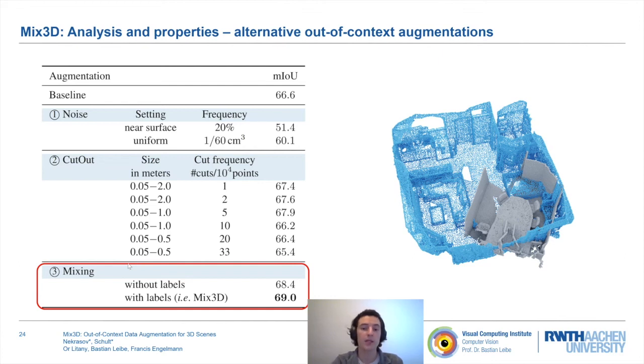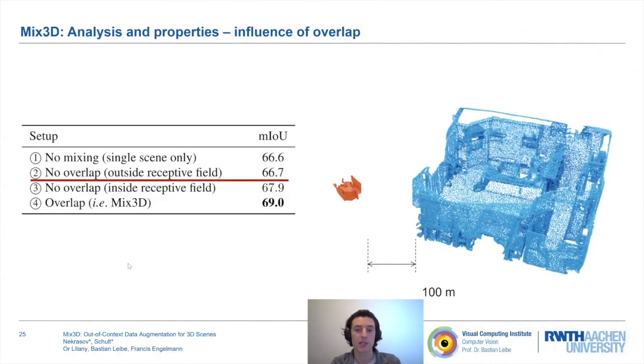Mix3D creates novel training examples by simply mixing two scenes. We investigate which role the overlap of these two scenes plays. First, as we effectively combine two scenes in a single batch entry, we analyze if the improvement is solely due to Mix3D as a batching technique. We place two scenes in the same batch entry, but create a large gap between them. Therefore, no information can be propagated from one scene to the other. Unsurprisingly, that doesn't result in a significant difference to the baseline.